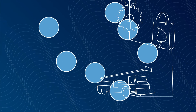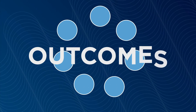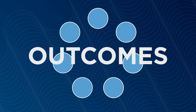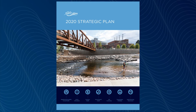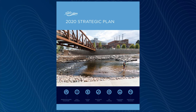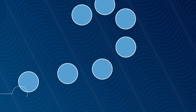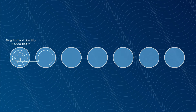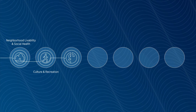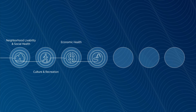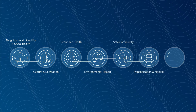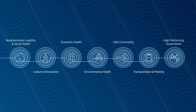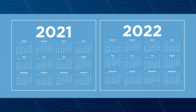These programs and services are categorized into what we call outcomes — the results we are seeking. They are used in BFO and the city's strategic plan to help categorize and communicate about all of the city's various programs and services. The seven outcomes are: Neighborhood Livability and Social Health, Culture and Recreation, Economic Health, Environmental Health, Safe Community, Transportation and Mobility, and High-Performing Government.